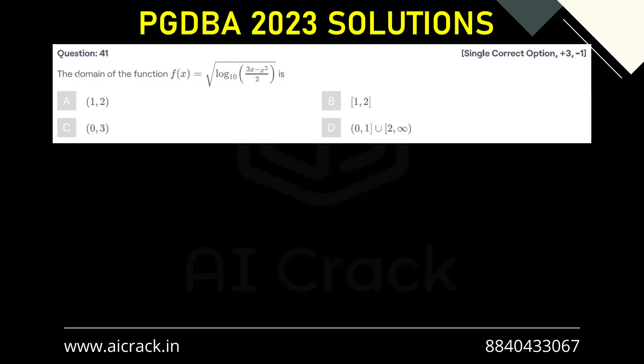Let's solve question number 41. The domain of the function f(x) equals square root of log base 10 of (3x minus x squared by 2). Now we have two conditions. The first condition is...